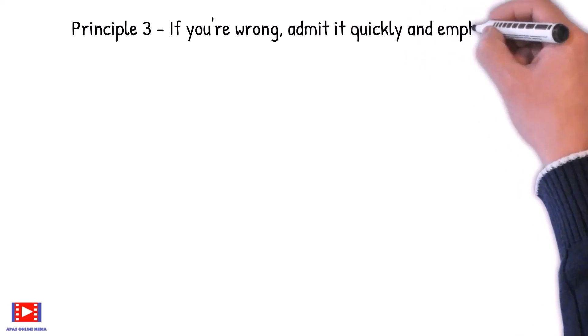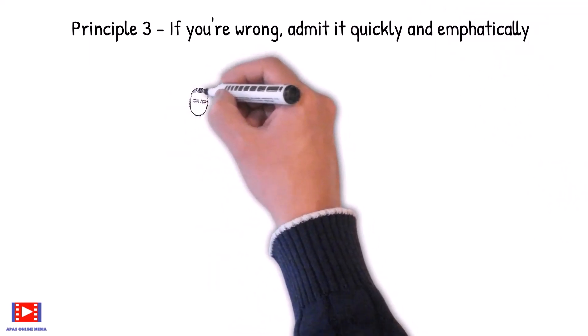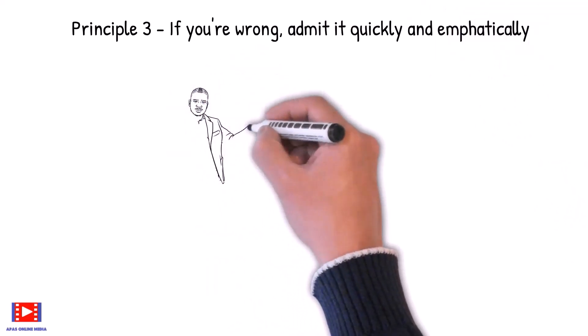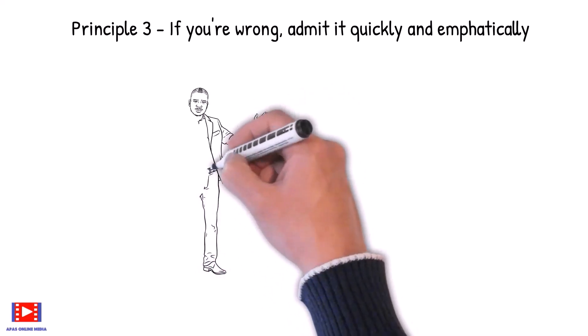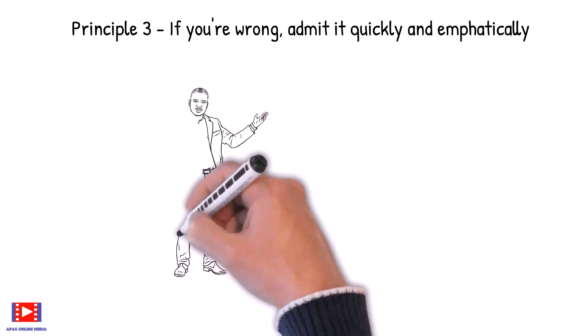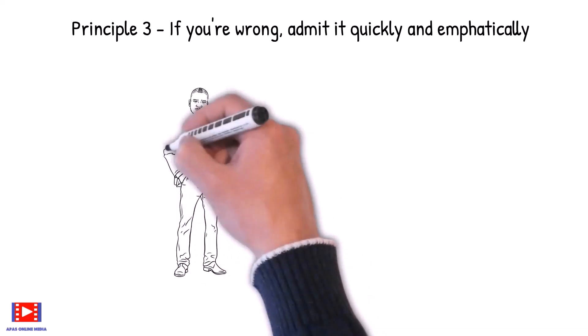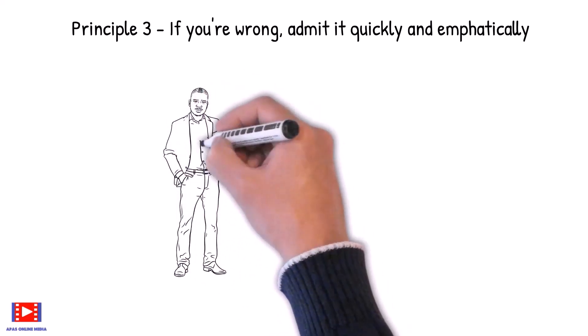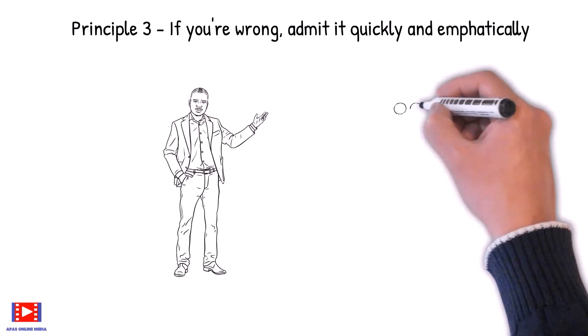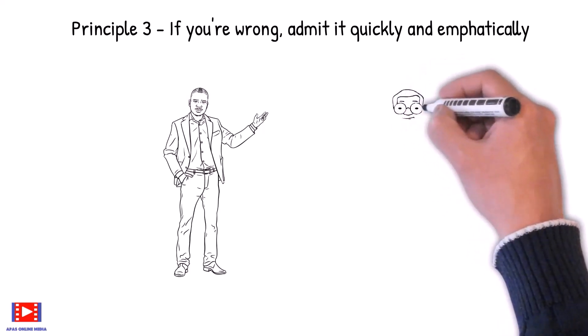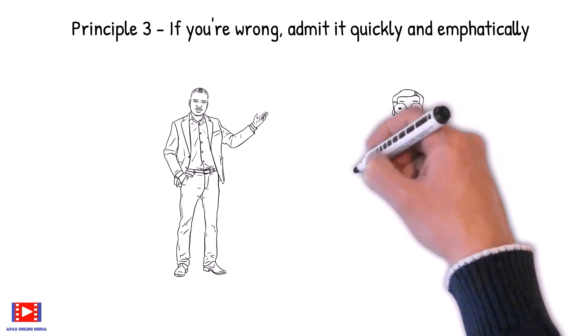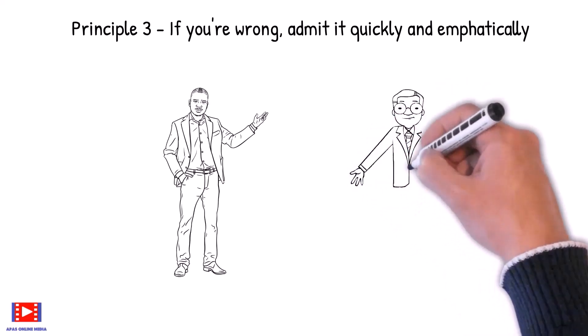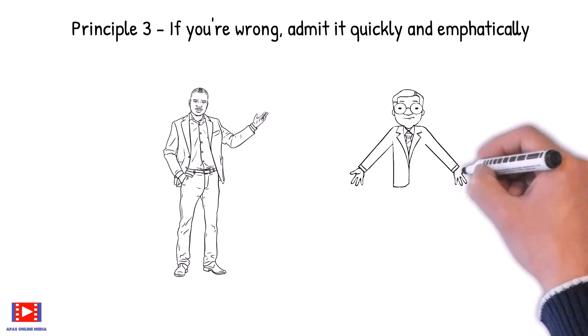Principle 3: If you're wrong, admit it quickly and empathetically. Any fool can try to defend his or her mistakes, and most fools do. But it raises one above the herd and gives one a feeling of nobility and exultation to admit one's mistake. So next time if you're wrong, admit it quickly with empathy.